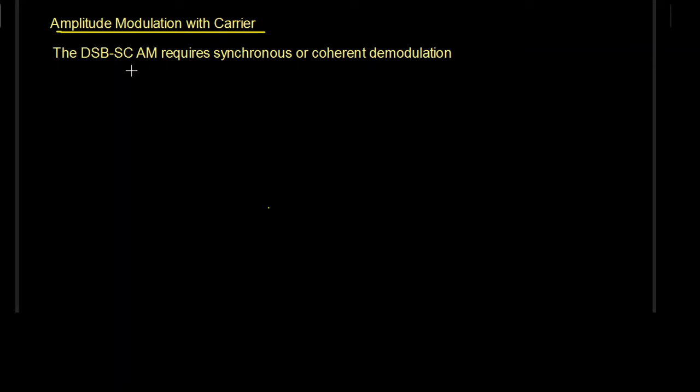In the previous video we studied double sideband suppressed carrier amplitude modulation, which required synchronous or coherent detection. This means the receiver needed to possess a carrier with the same frequency and same phase as on the transmitter side. This requirement is not easy to achieve because the modulated signal might have traveled hundreds of miles and could have suffered from unknown frequency shifts.